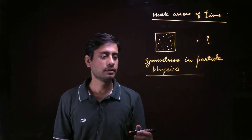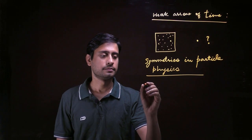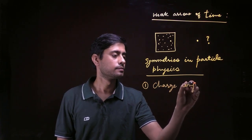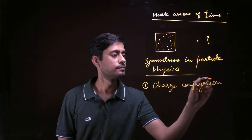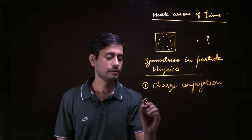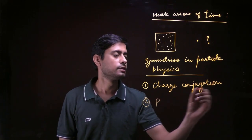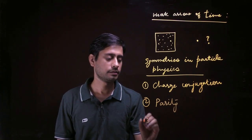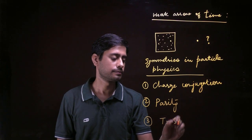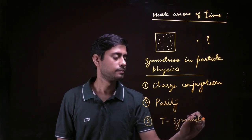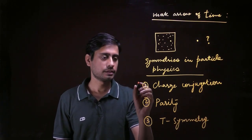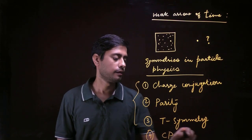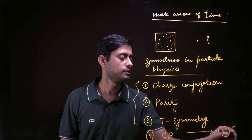There are basically three kinds of symmetries. The first is charge conjugation, also called C-symmetry. The second is parity, or P-symmetry. And the third is time symmetry, T-symmetry. After discussing these three symmetries, we will come to the fourth — CP symmetry — and then the fifth, which is called CPT symmetry.